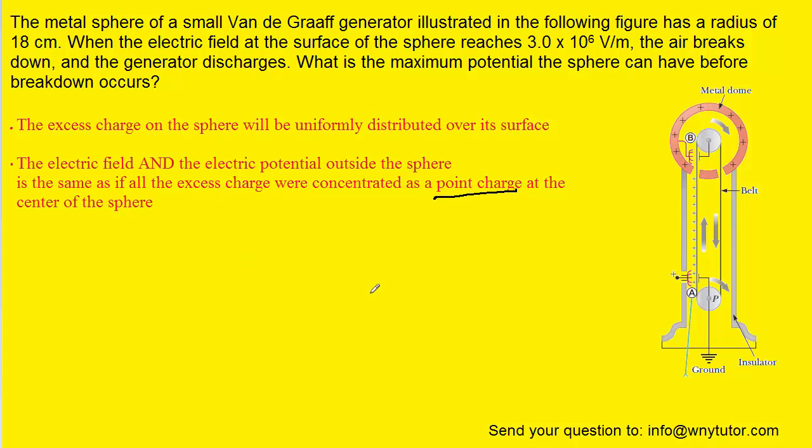I admit that that was a bit of a mouthful, but what it means essentially is that we can treat this metal sphere as if it were a point charge. Now for a point charge, a positive point charge in this case, we know that the electric field produced by that point charge can be calculated using this equation.